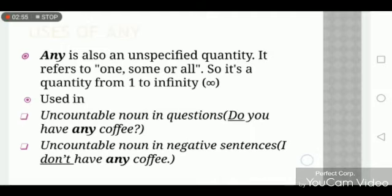We also use 'any' with uncountable nouns in negative sentences. For example: 'I don't have any coffee.' Coffee is an uncountable noun, and this statement is negative because we have used 'not' in it, so that's why we use 'any' in this sentence.